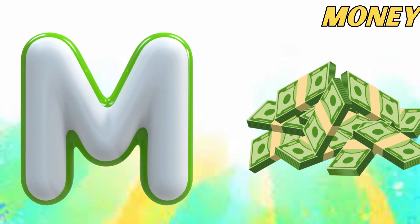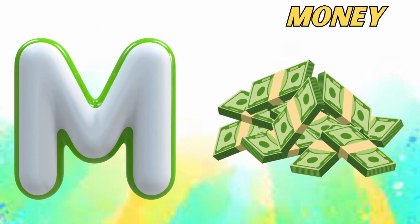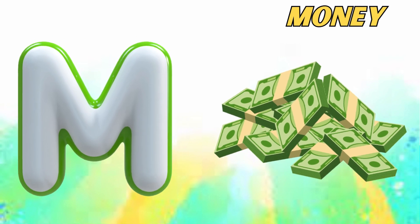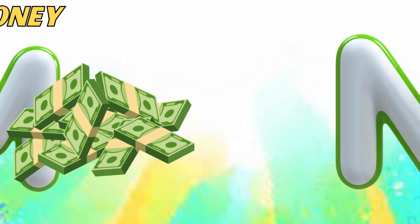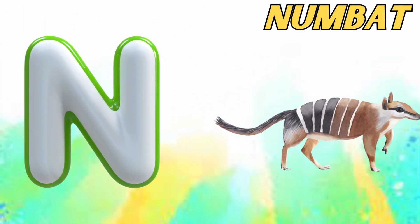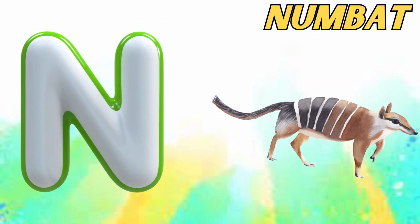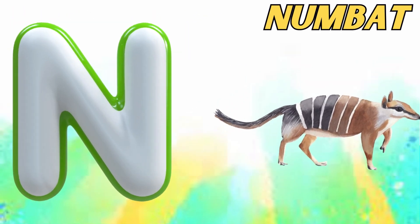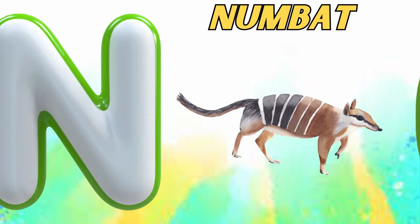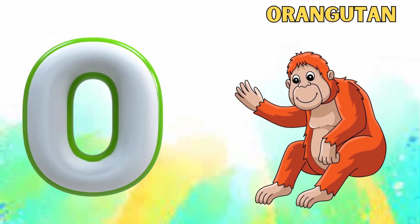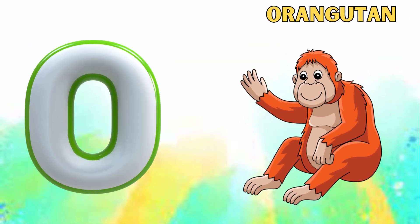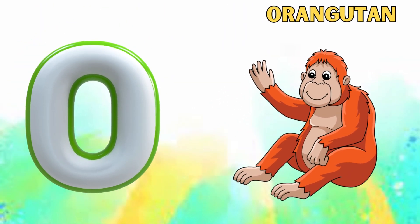M is for money, m-m-money. N is for numbat, n-n-numbat. O is for orangutan, o-o-orangutan.